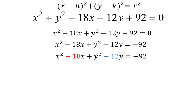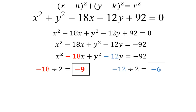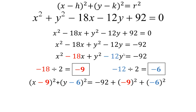Now I'm ready to complete the square. I divide negative 18 by 2 and get negative 9 — I put a box around that. I do the same with negative 12: divide by 2, get negative 6, and put a box around that. Now writing the equation: x comes first, and I take the boxed number negative 9 and put it with x — I don't change the sign, so it's x minus 9, close parentheses squared, plus parentheses y minus 6, close parentheses squared, equals negative 92. Then I add negative 9 squared — make sure you put parentheses around that — plus negative 6 squared, with parentheses around that as well.